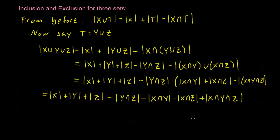This three-set formula is an example of the Principle of Inclusion and Exclusion, while the original two-set formula can be thought of as the principle for just two sets. With two sets, we add the orders of each individual set and subtract the order of their intersection. With three sets, we add the orders of each individual set, subtract all possible intersections of two sets, and then add the intersection of all three sets.